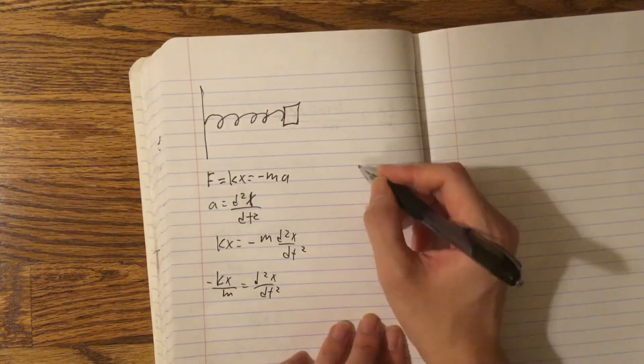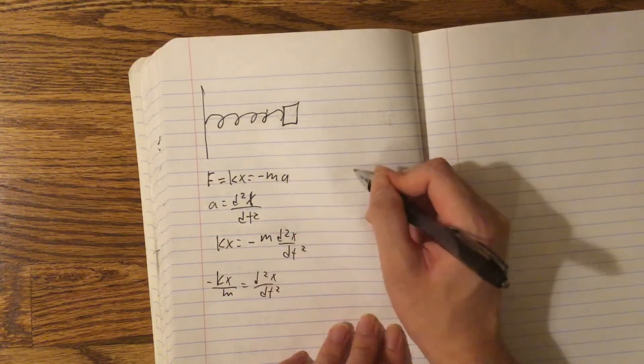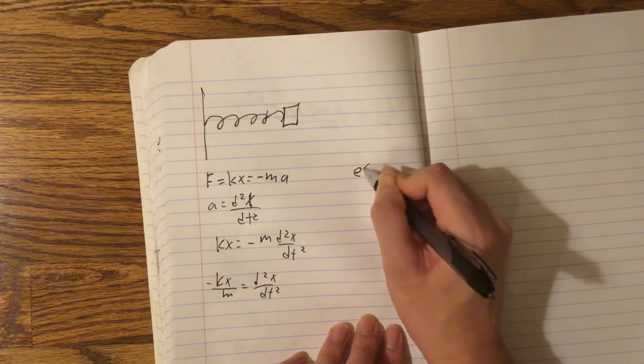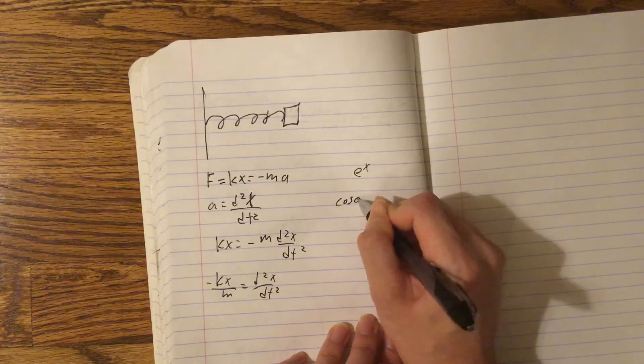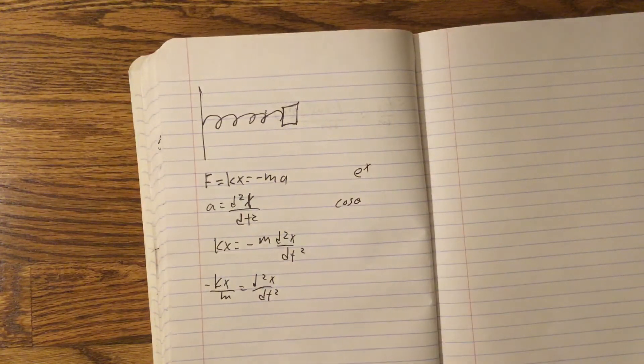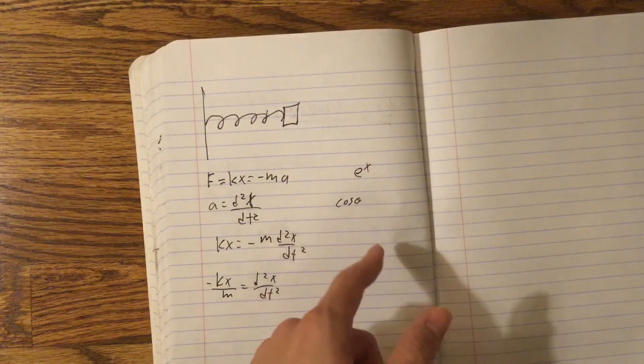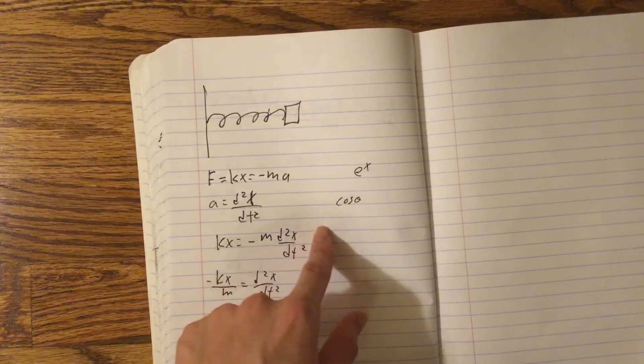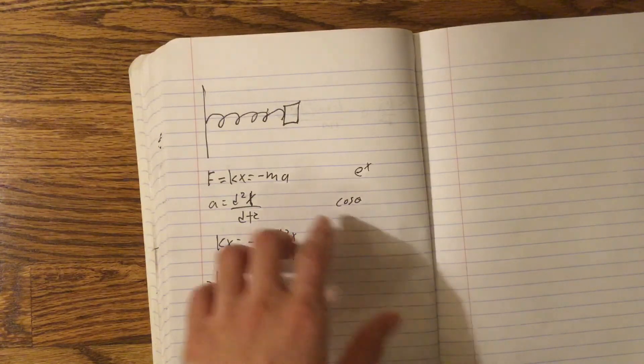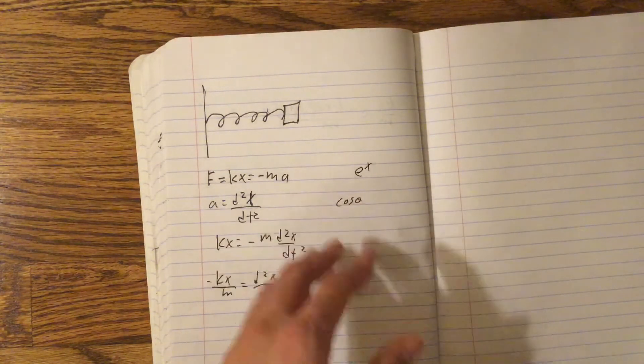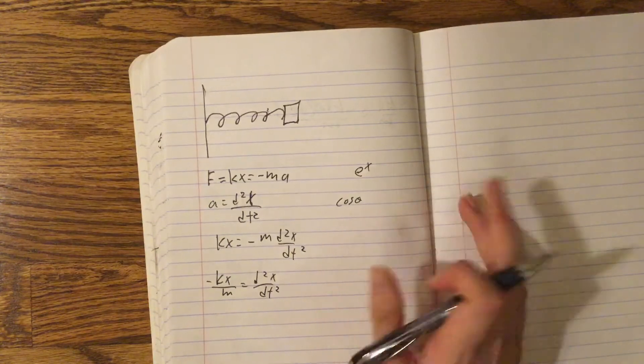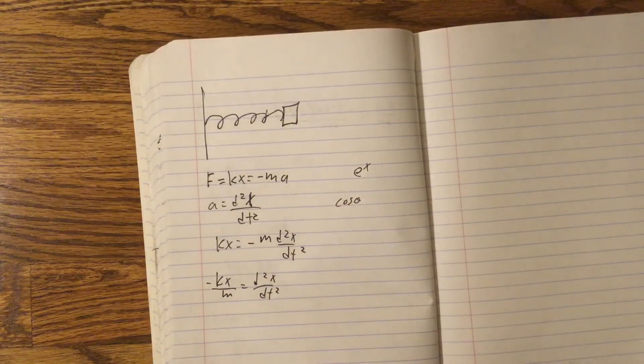Well, the only types of functions that can have these type of properties is e of x or cos theta or sin theta. I'm just going to use cos theta here because sin theta and cos theta are pretty much the same, except that sin theta is shifted to the right or to the left by a certain amount of radians. So we can use either cos theta or sin theta. I'm just going to use cos theta for simplicity.